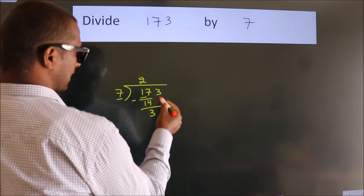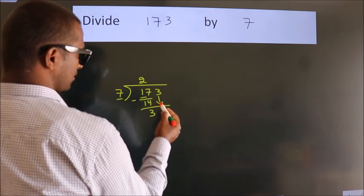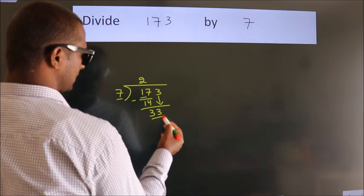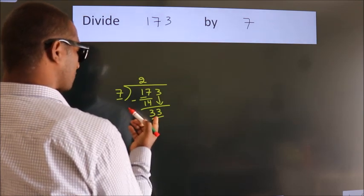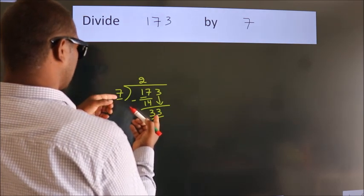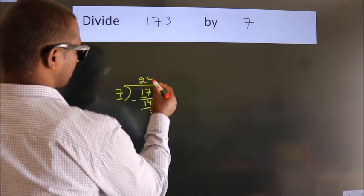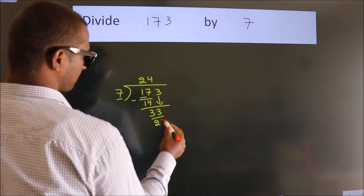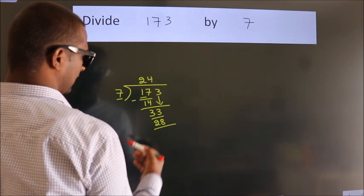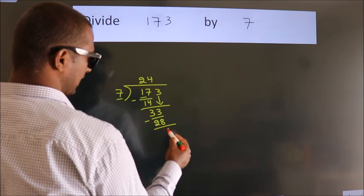After this, bring down the beside number. So 3 down, so 33. A number close to 33 in the 7 table is 7 fours, 28. Now we subtract. We get 5.